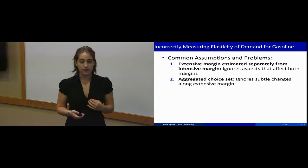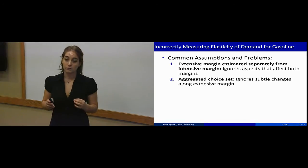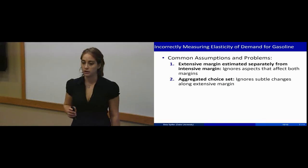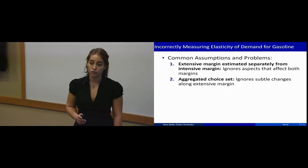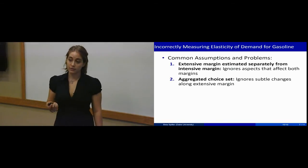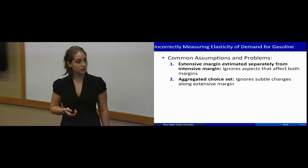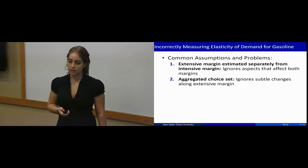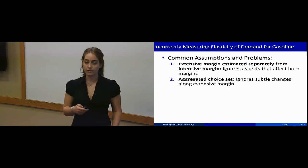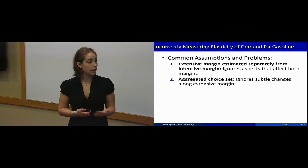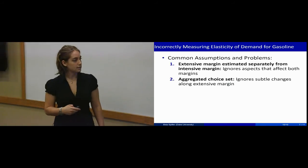My paper is going to disaggregate the choice set completely so that individuals can choose a model year—for example, a 1992 Ford Taurus. While this does significantly increase the dimensionality of my paper, my method allows for it. I will demonstrate that aggregating the choice set significantly impacts the elasticity estimate.